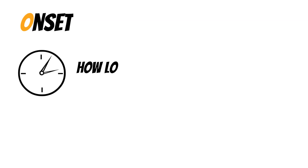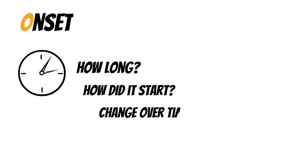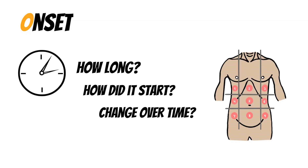Next is the onset of pain — this is all about timing. How long has it been going on? How did the pain actually start, and has it changed over time? In appendicitis, for example, the pain can start in one location and end up in another — from one side to the other. Did it start after doing something in particular? If I was lifting a heavy box in my garage and suddenly got a pain in my right side, is that the ribs or something else? That's onset of pain.